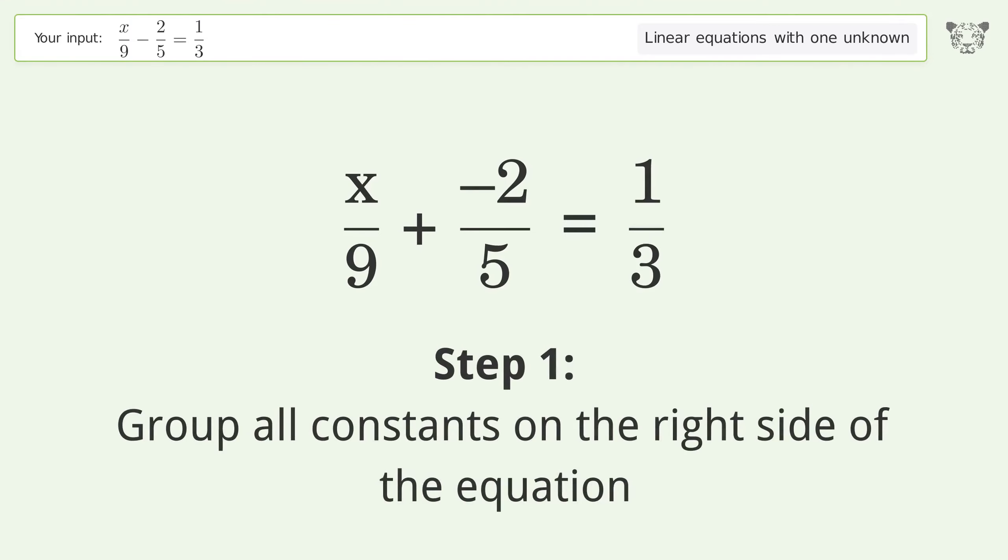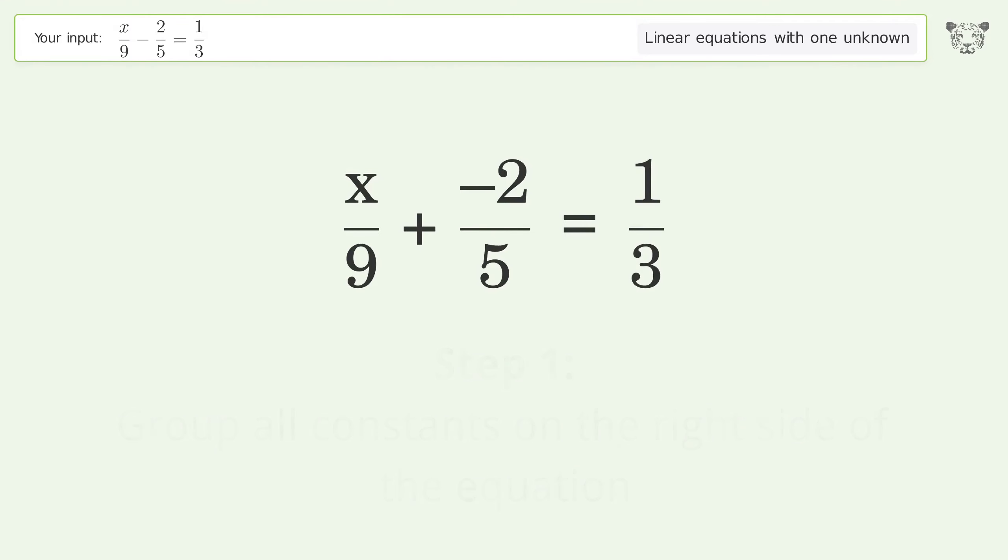Group all constants on the right side of the equation. Add 2 over 5 to both sides.